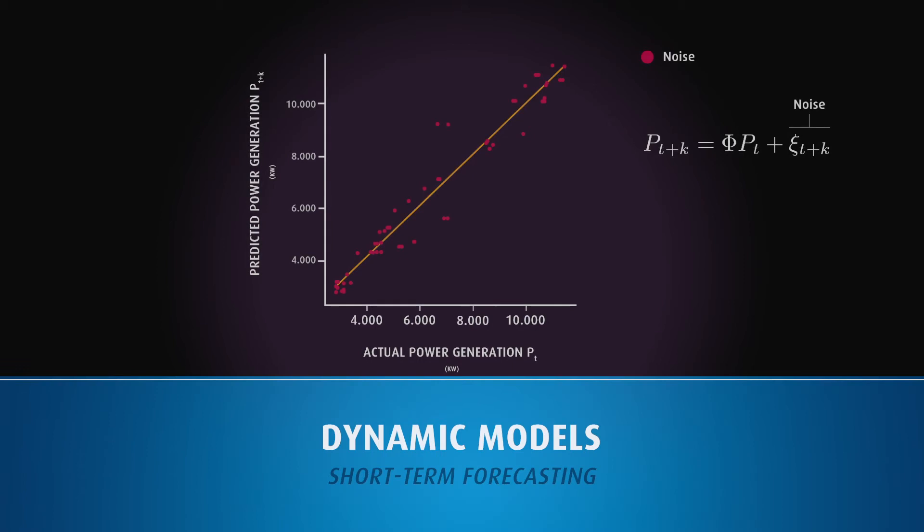A wind farm power curve can be modeled using nonparametric or conditional parametric models. You can read more about these models by consulting the references. The structure and number of parameters of the dynamical model depends on the prediction horizon. For short-term forecasting, autoregressive models are very important. For very long-term forecasting, seasonal components and a dependency on the static wind farm power curve is more important.